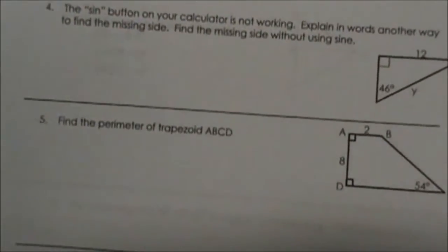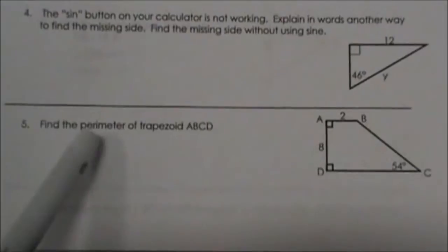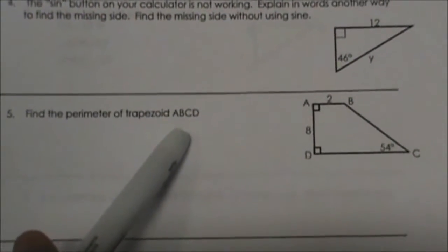Now let's jump into some multi-step problems that you may see on the SAT. Find the perimeter of the trapezoid ABCD. Here is our trapezoid.